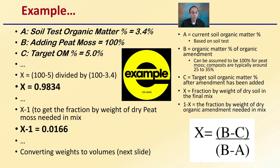We take B minus C — which is 100 minus 5, the organic matter percentage of the amendment minus the target — and divide that by B minus A — which is 100 minus 3.4, the peat moss percentage minus the soil organic matter percentage. This gives us X = 9.834. Then 1 minus X gives the fraction by weight of dry peat moss needed in the mix, which is 0.0166.